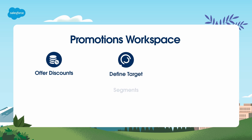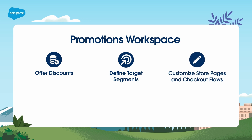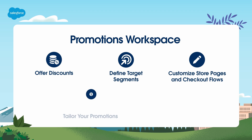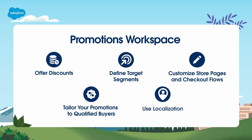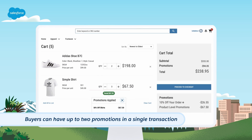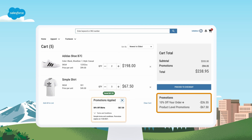You define the target segments, discounts, and qualifier rules to ensure that buyers receive the proper savings. You can customize your store pages and checkout flows to prominently feature promotions for eligible customers. Then, you use Experience Builder to tailor how your promotions show to qualified buyers. Localization lets you tailor promotions for global audiences. Buyers can have up to two promotions in a single transaction: one at the line item level, such as a product or product category promotion, and another on their total order.